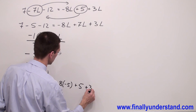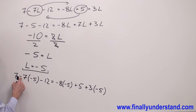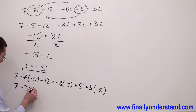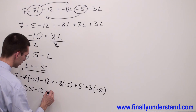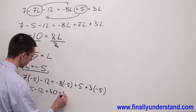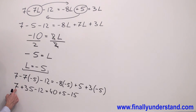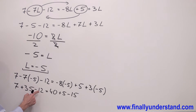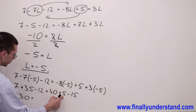Plus 3 times negative 5. So I have 7 minus 7 times negative 5, which is positive 35, minus 12. On the right side: negative 8 times negative 5 equals 40, plus 5, and positive 3 times negative 5 is negative 15. So: 7 plus 35 equals 42, and 42 minus 12 equals 30. On the right: 40 plus 5 equals 45, and 45 minus 15 equals 30.